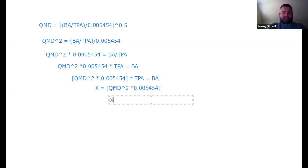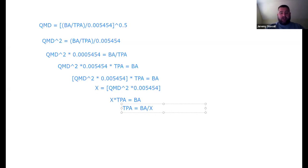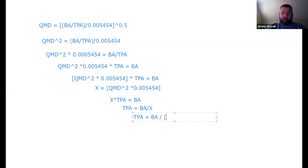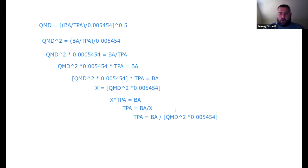So trees per acre equals basal area over X — I just divide both sides by X. Plugging back in: TPA = BA / [QMD² × 0.005454]. When doing this on your calculator, make sure order of operations is correct. You need to square QMD first — don't raise QMD to a power of 2 times 0.005454, that will be incorrect.